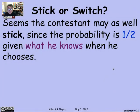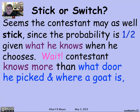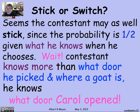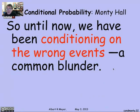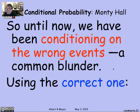That's confusing. It seems as though the contestant may as well stick, because at the point they must decide whether to stick or switch, knowing where the goat is and what door they picked, it's 50-50. The probability that the prize is at door 1 is one half, so it doesn't matter if they stay or switch to the unopened door. But wait — that's not right, because the contestant not only knows what door they picked and that there's a goat behind the door Carol opened, but they know that Carol opened that specific door. That's how they found out the goat was there. So the previous two arguments are conditioning on the wrong events — a typical mistake you really have to watch out for.